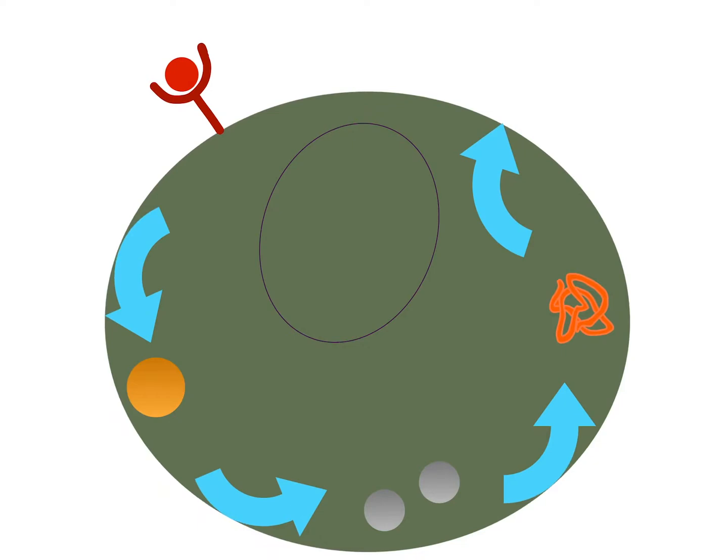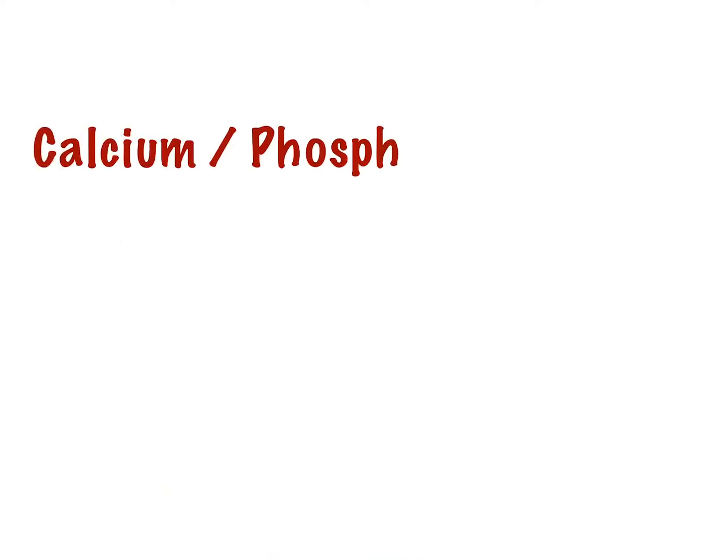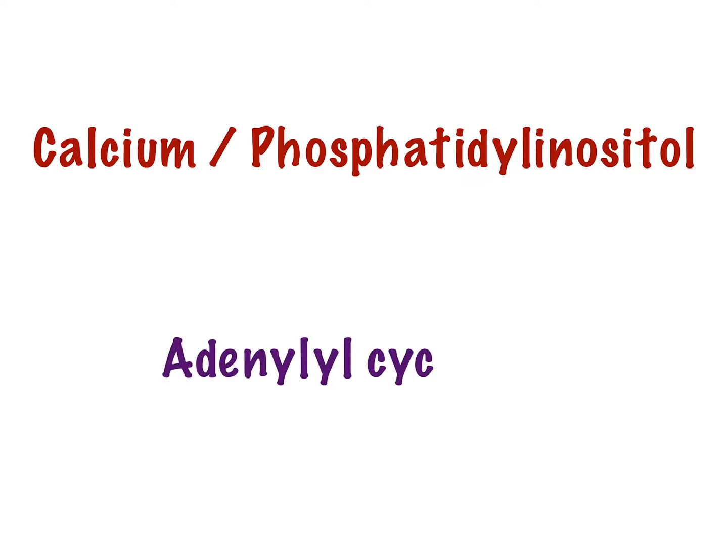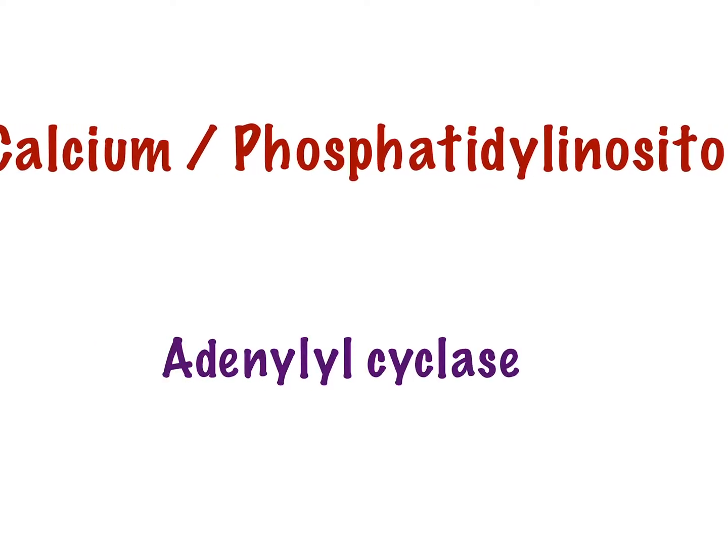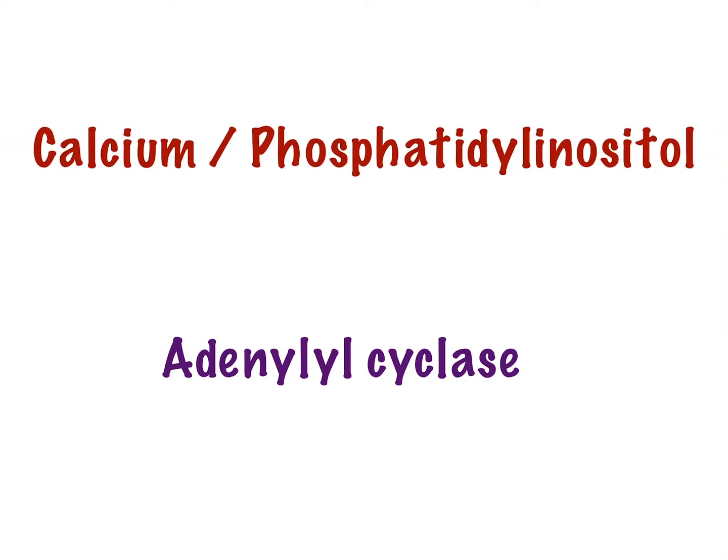The most widely accepted second messenger systems are calcium phosphatidyl inositol and adenylyl cyclase. Now let's have an overview of the system of calcium phosphatidyl inositol.